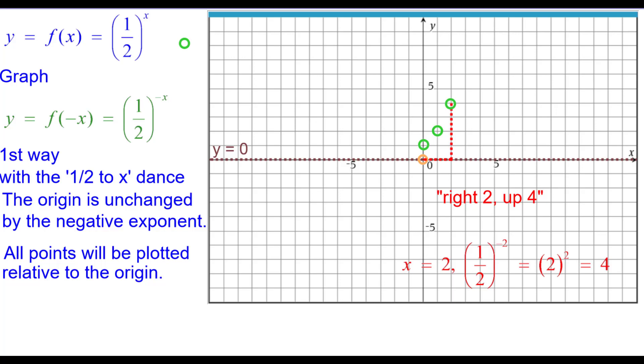Right 2 up 4. When x is 2, the opposite of 2 is negative 2. A half raised to the negative 2 power reciprocal to 2. And then squared is 4.